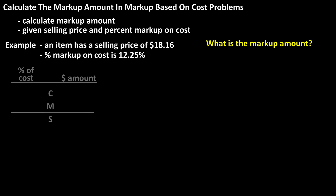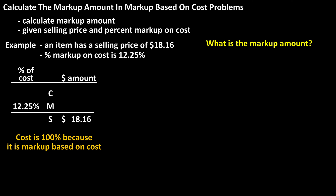We're going to start by drawing a table with percents and dollar amounts for cost, markup, and selling price, and we'll fill in what we know. We know the selling price is $18.16 and the markup on cost is 12.25%. Since it is markup based on cost, the cost will be 100%. The percent selling price based on cost will be the cost percent plus the markup percent, so 112.25%.